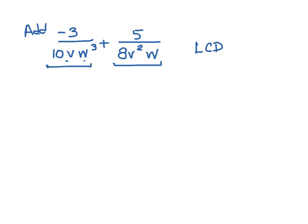So here are two denominators. We just simply have more variables in it. So we have a 10vw cubed, that's one of our denominators, and we also have an 8v squared w.